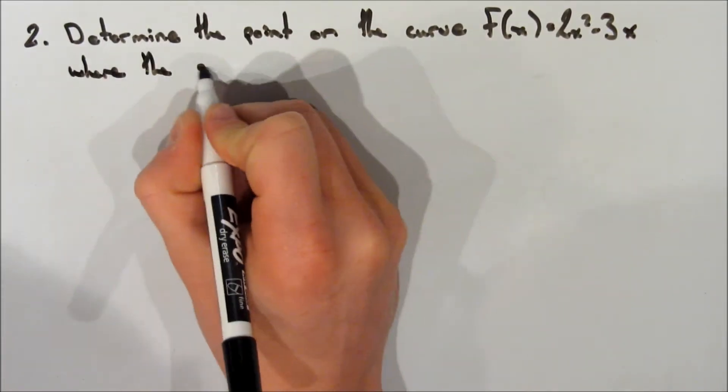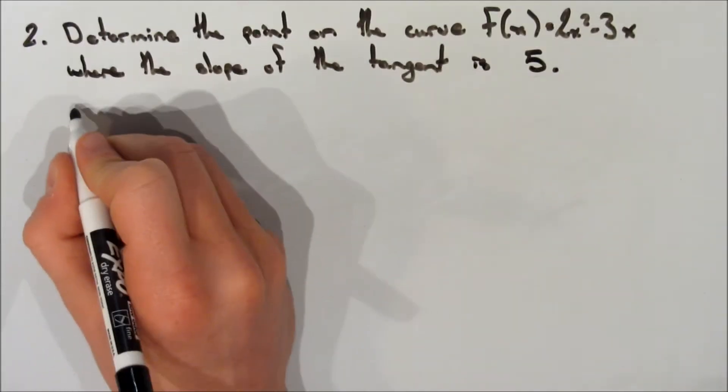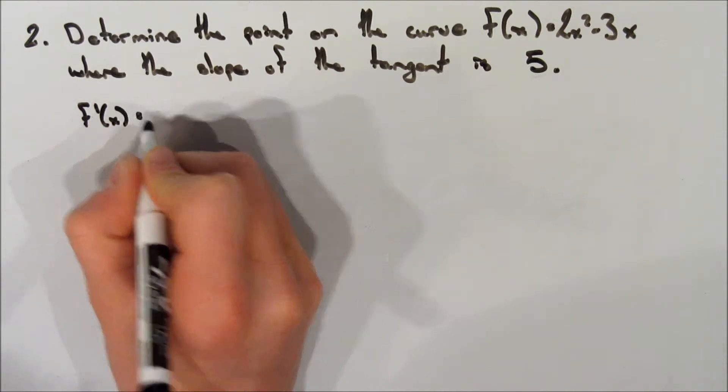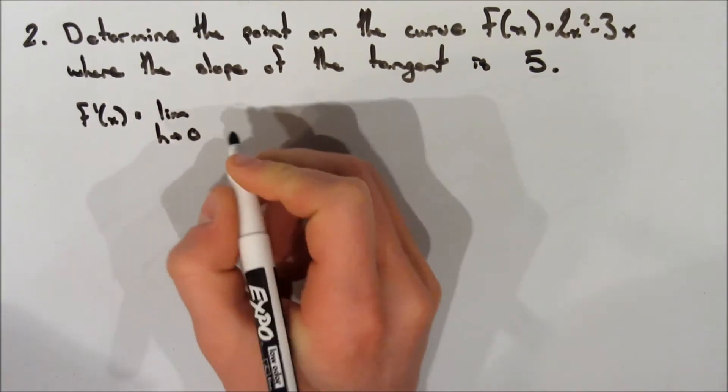So this time we're going to do it the other way around. We want to determine the point on the curve f of x equals 2x squared minus 3x, where the slope at the tangent is 5. So you probably could have guessed, the first thing we're going to do is take the derivative.